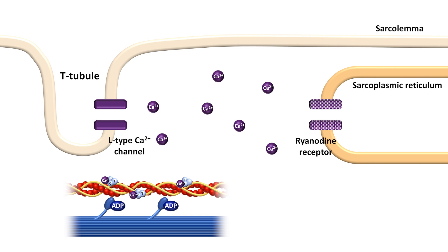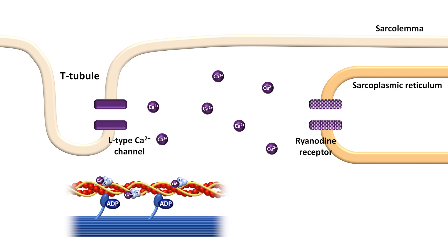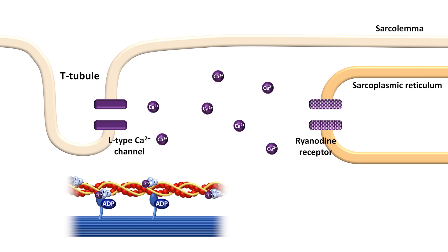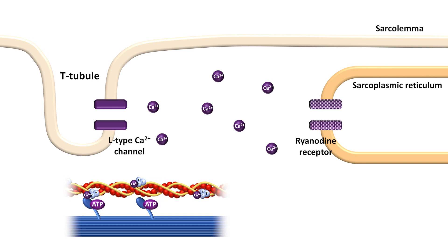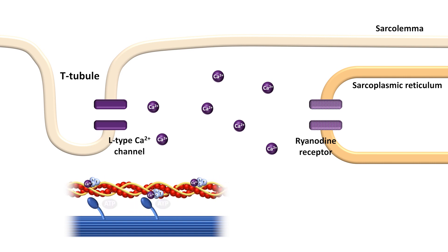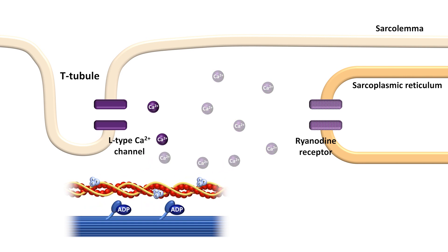The myosin heads bind to actin, and using the energy from ATP, cross-bridge cycling occurs. While still bound to actin, the myosin head tilts, causing the two filaments to slide relative to one another. This process continues for as long as tropomyosin is out of the way of the binding site, which is calcium-dependent. As soon as the concentration of calcium in the cytosol drops, tropomyosin moves back and the cycle ends, until the next action potential.